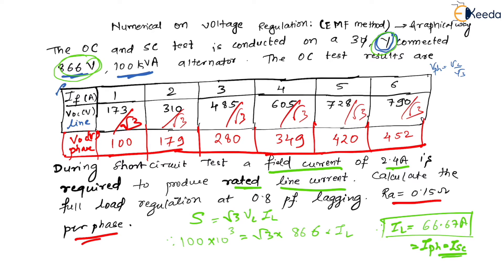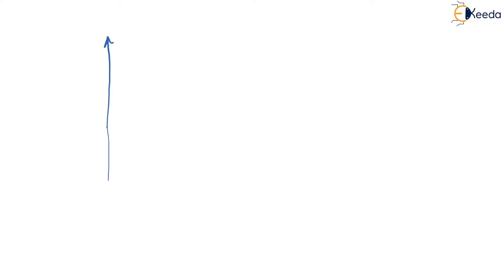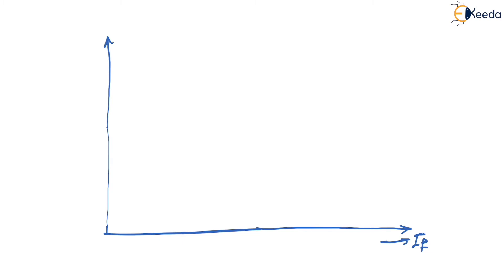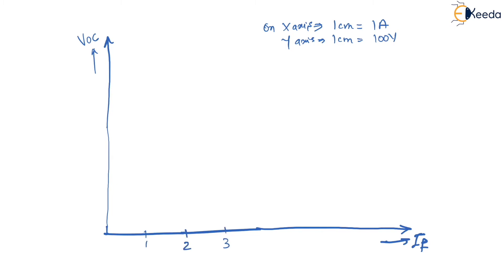Now we plot the OCC and SCC on graph paper — this must be done on graph paper in your exam. The x-axis represents field current IF, with 1 cm = 1 A. The y-axis represents VOC in phase volts, with 1 cm = 100 V.